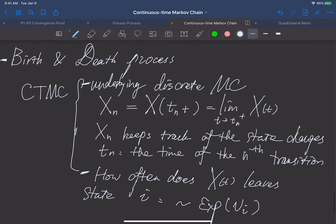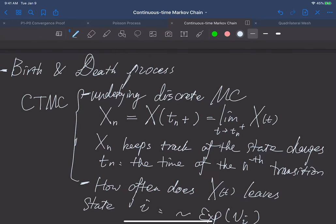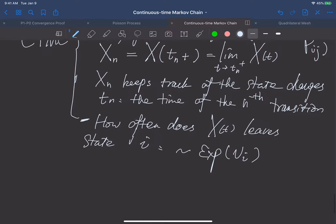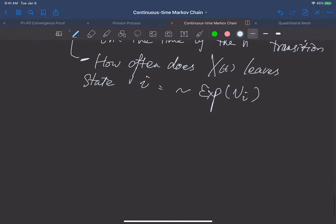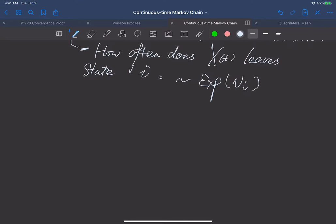And normally, if we talk about transition probabilities, we mean to say this underlying discrete Markov chain's transition probability p_ij. With this setup, we can define our birth and death process.